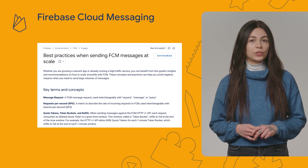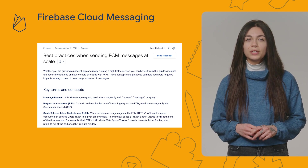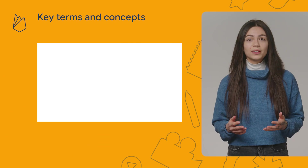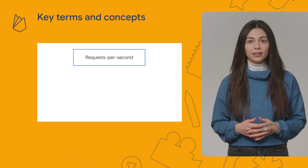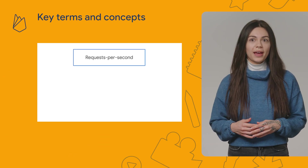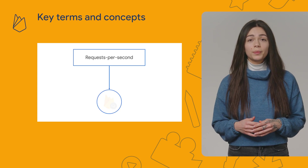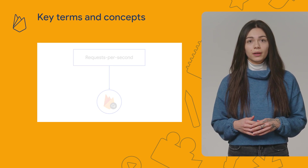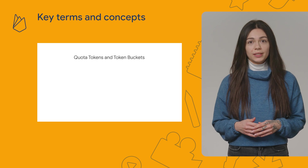Before we dive into these best practices, it's important to understand some key terms and concepts. The first concept I want to cover is requests per second, or RPS — a metric to describe the rate of incoming requests to FCM. Next are quota tokens and token buckets.